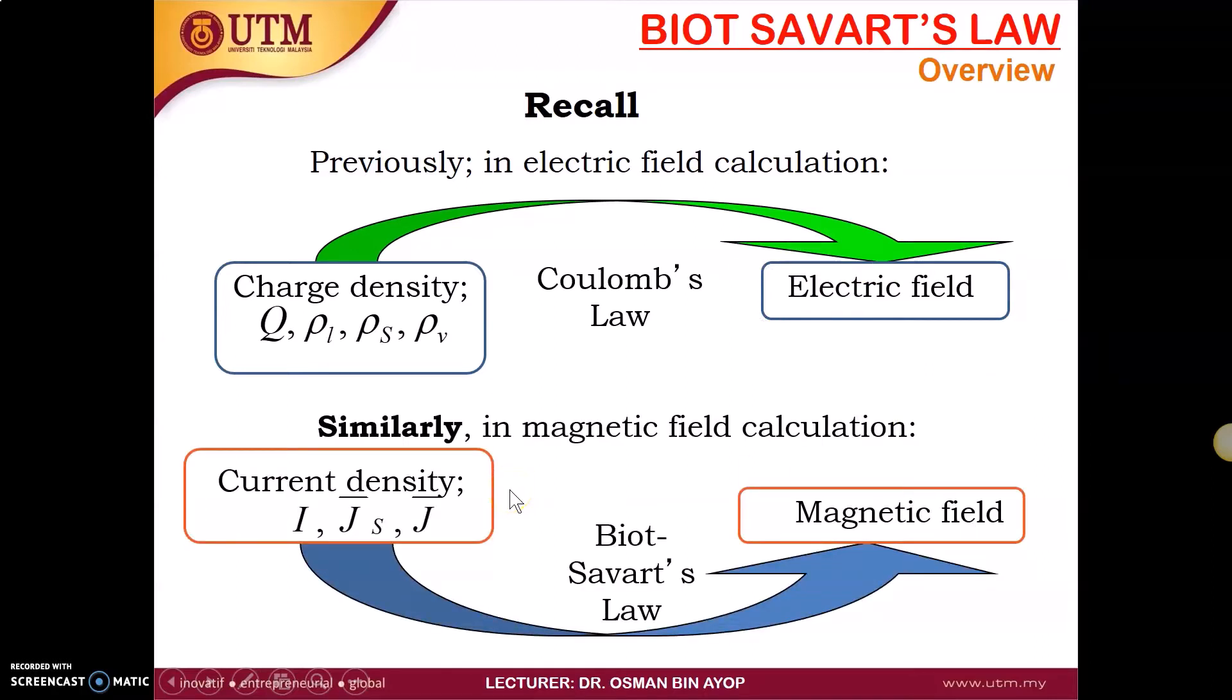Similarly, in magnetic field calculation, we have the current density, whether we have the filamentary current I, the surface current K, and also the volume current J. And by using the Biot-Savart law, we can find the magnetic field intensity.